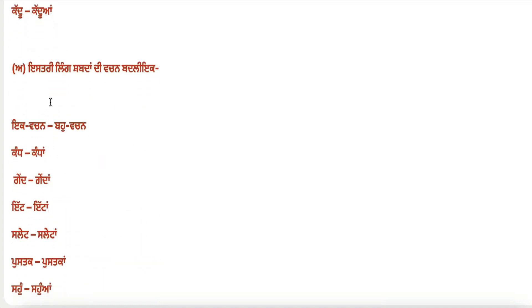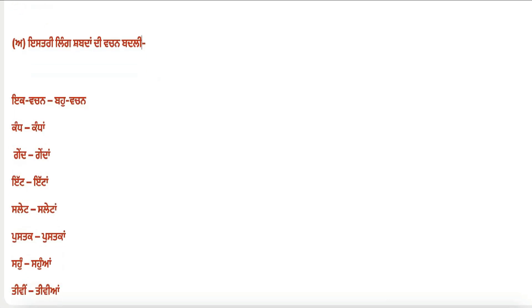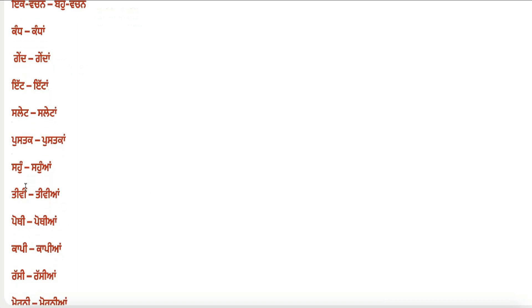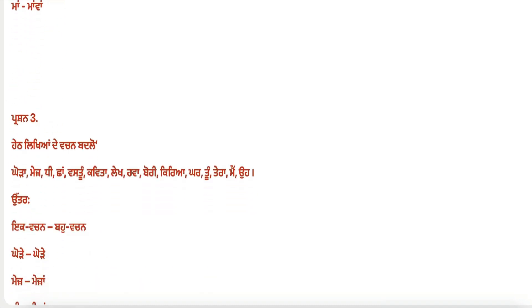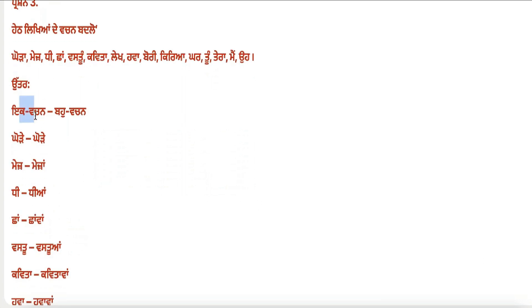Now for istri ling (feminine) words, the vachan change: tivi–tivian, pothi–pothian, kapi–kapian, rasi–rasian, morni–mornian, vastoo–vastuan. Now write the vachan (number) change of the words given here.